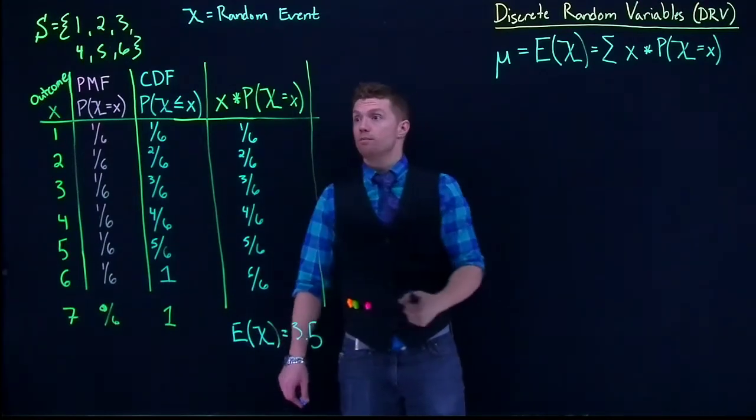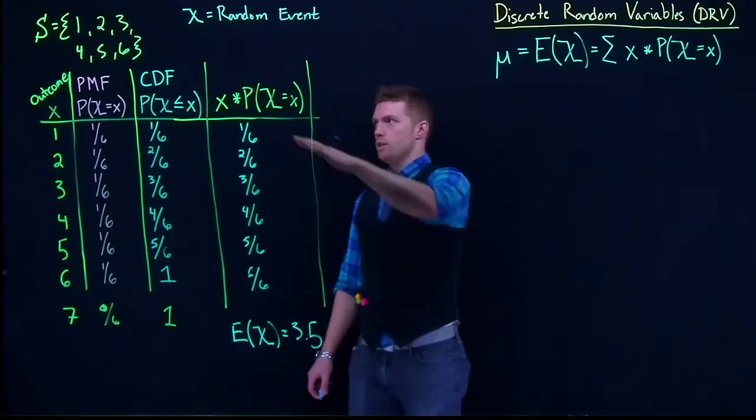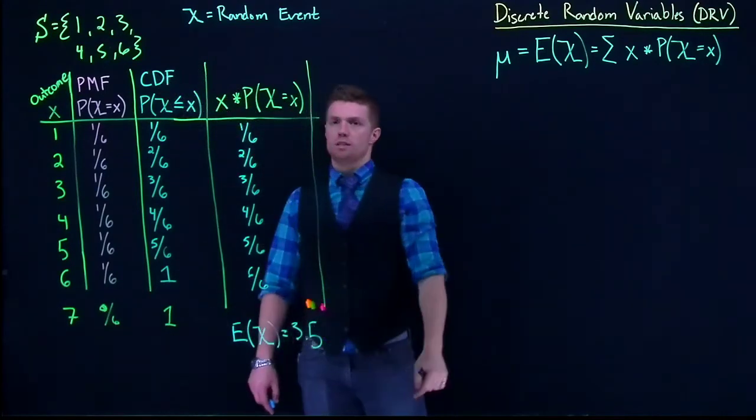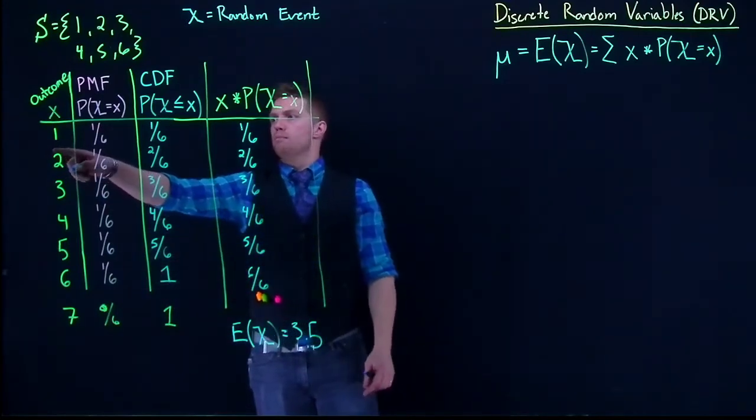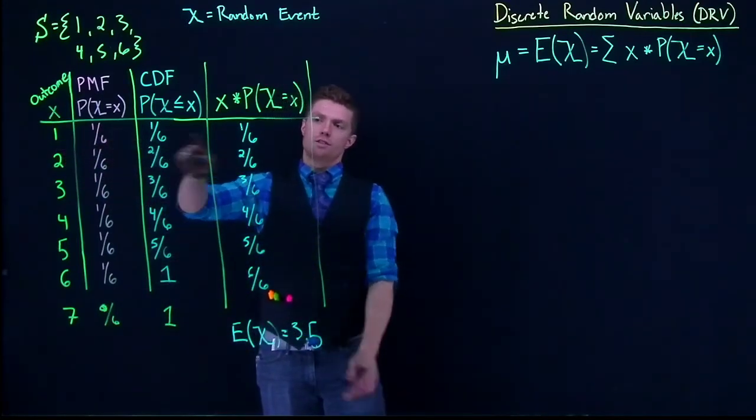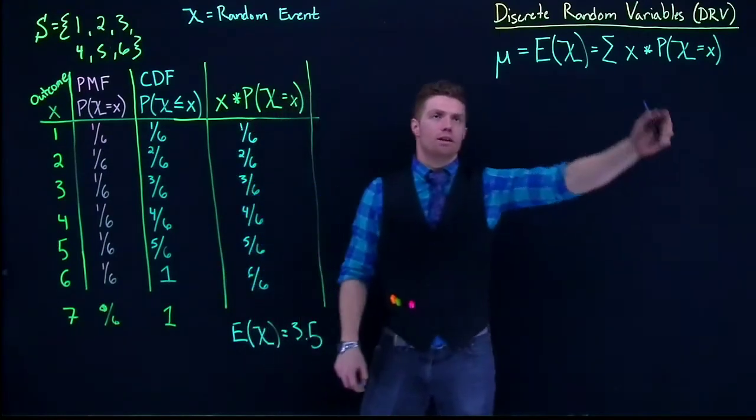And this will work for any discrete random variable. If you need to know the expected value and you have its probability table, you can find the expected value. You just multiply the outcome by its associated probability of success all the way down and take a sum of it. And that will give us mu.